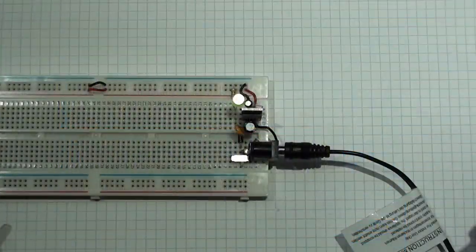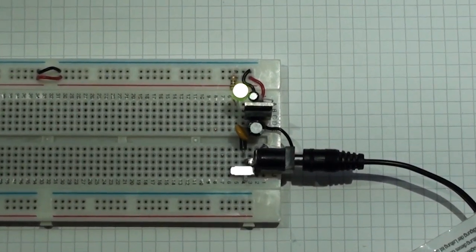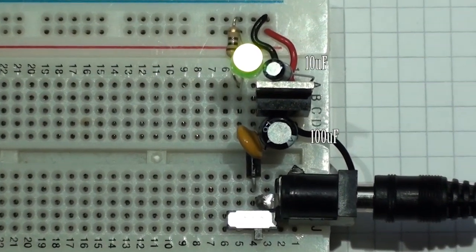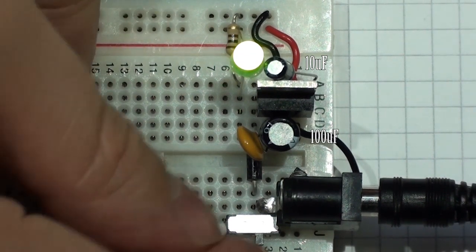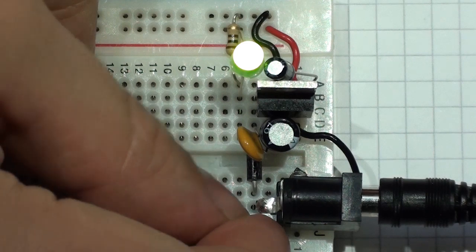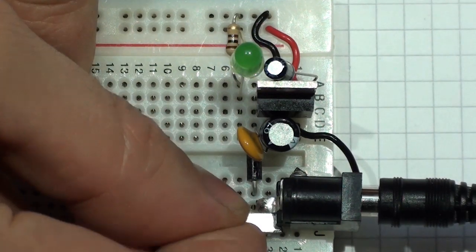Here I have connected a 100 microfarad capacitor on the input side of the voltage regulator and a 10 microfarad capacitor on the output side. Capacitors act as a store of energy on the power rails and help smooth the dips and rises in the supply.